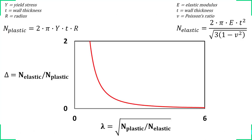In my opinion, the most important diagram in shell buckling is this one. We have lambda, the relative shell slenderness, and delta, the ratio of the elastic to the plastic buckling load. The equations are relatively simple — they need the elastic modulus, wall thickness, Poisson's ratio, yield stress, and radius.